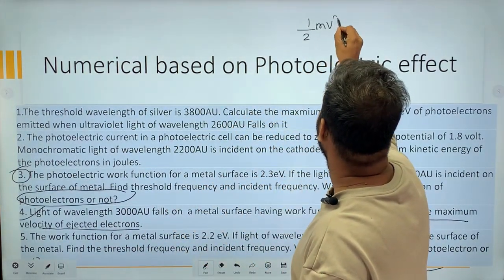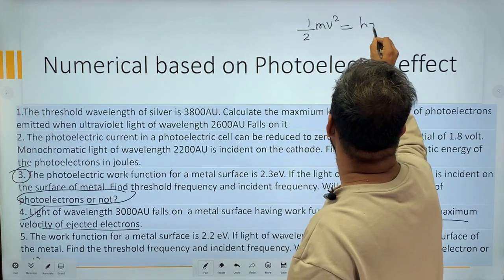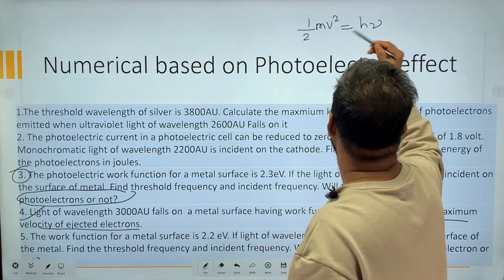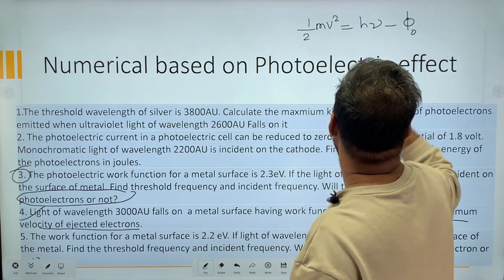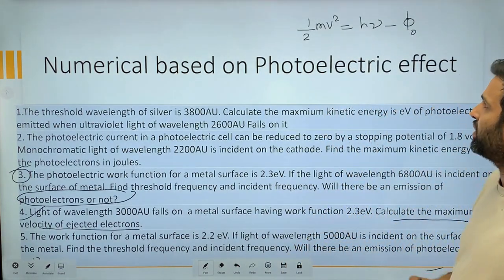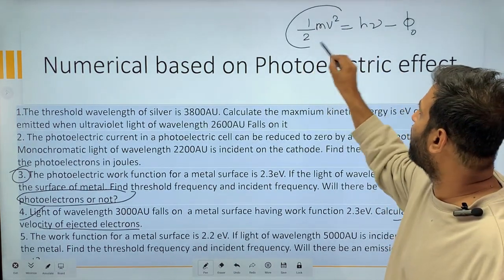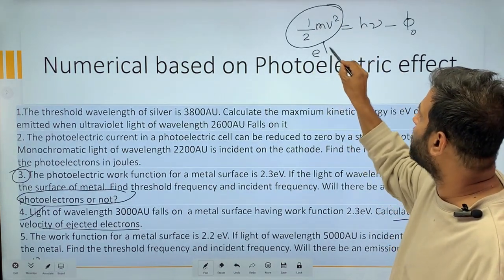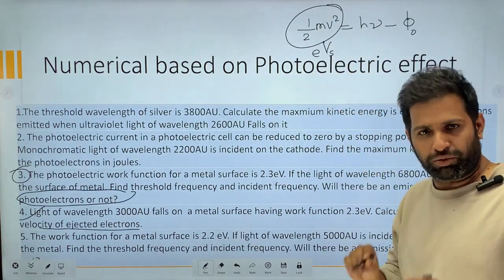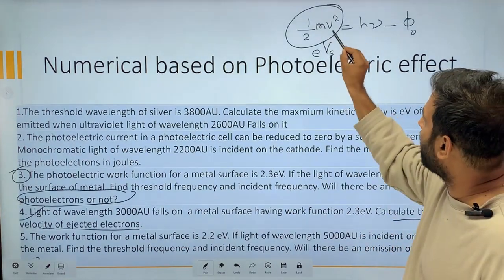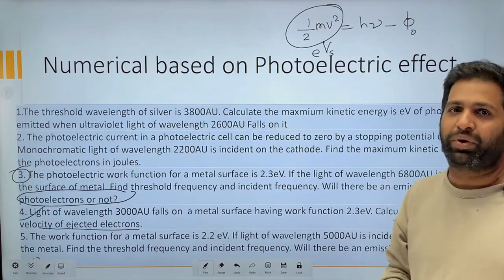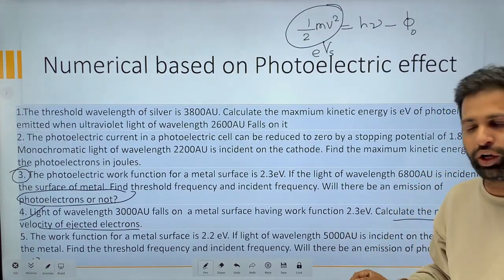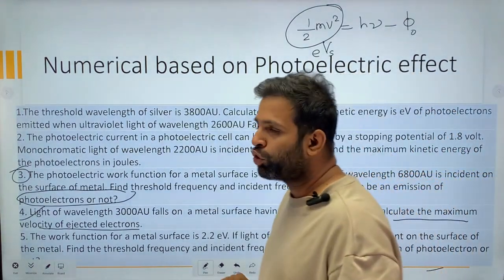Formula baste hai but what I observe ki is chapter me sabse zyada baar jo board exam me questions poocha hai aur jo ki bahut important hai wo hai stopping potential wale sums yes but chalo stopping potential wale questions kaafi important hai okay kuch nahi Einstein equation hi hai stopping potential pe bhi Einstein equation kya hai half mv square is equal to h nu okay minus phi.